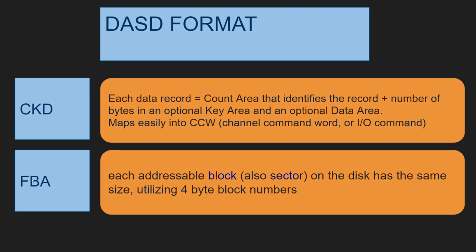FBA devices were cheaper — think of them almost like SCSI disks. In a CKD device, each data record on the disk controls the number of bytes stored in that record, and optionally a key area for fast access. The CKD architecture maps particularly well into the mainframe's I/O architecture, where the CPU sets up a channel command word in real memory and sends it to the device controller. That's why CKD goes hand in hand with MVS and ZOS.